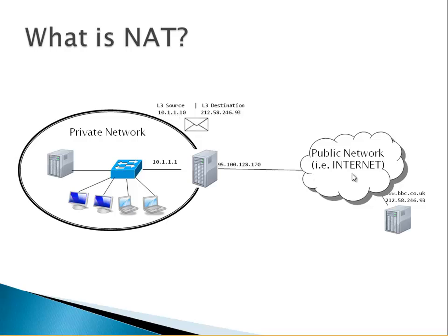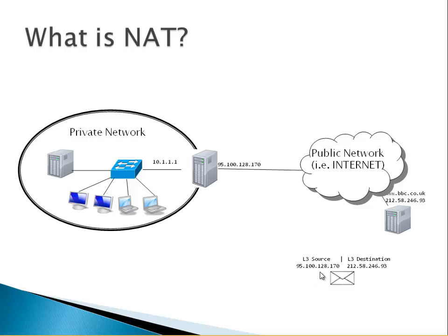We can't send a private IP address directly to the public network, so the gateway translates it. The gateway removes the private source address and replaces it with its own public IP address as the source, then forwards the packet to the BBC. This is what happens on pretty much every local area network. The BBC receives the packet and sees only that public IP address as the source — it does not know which computer inside the private network sent the packet, nor that the private network exists.